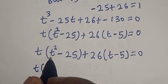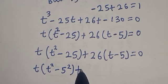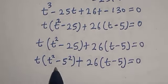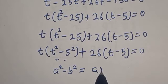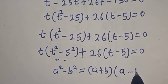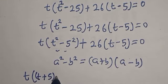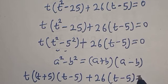We recognize t squared minus 25 is a difference of squares: t squared minus 5 squared. Using the identity a squared minus b squared equals a plus b times a minus b, we get t bracket t plus 5 multiplied by t minus 5 plus 26 bracket t minus 5 is equal to 0.